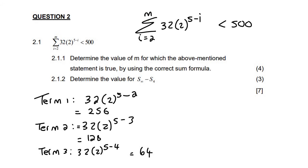So can you see what's happening? Term one is 256, term two is 128, and term three is 64. So what's happening here is that if you had to add all of these numbers together, they want to know what must m be.